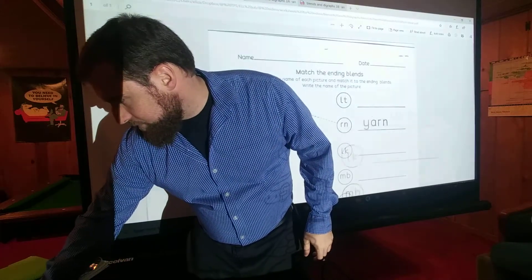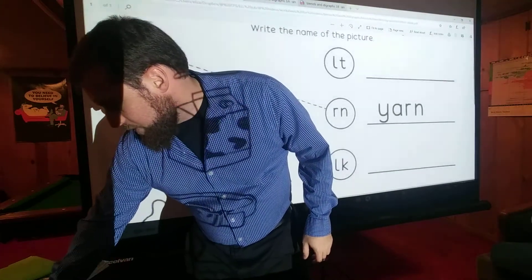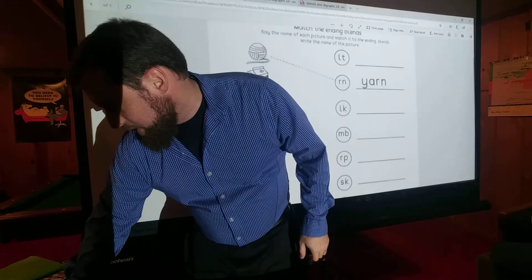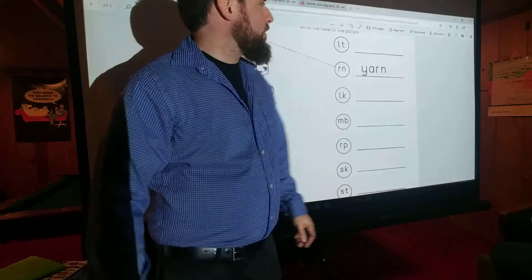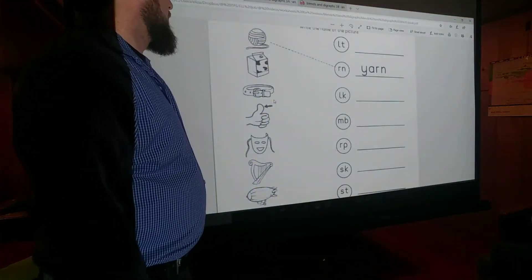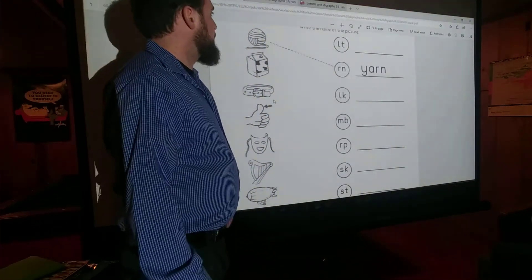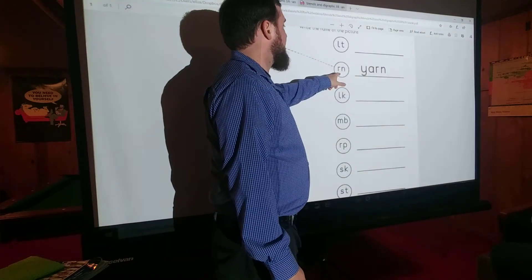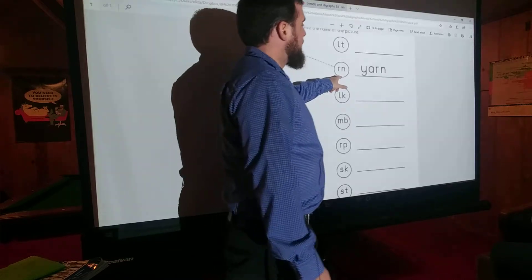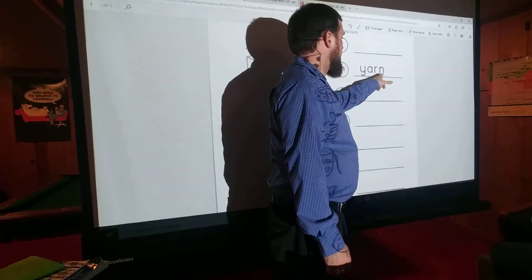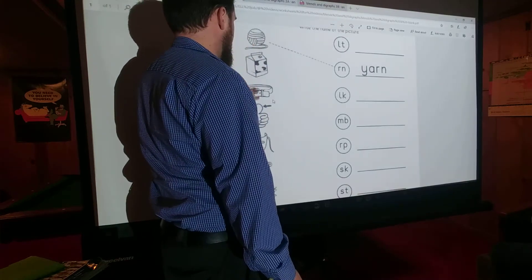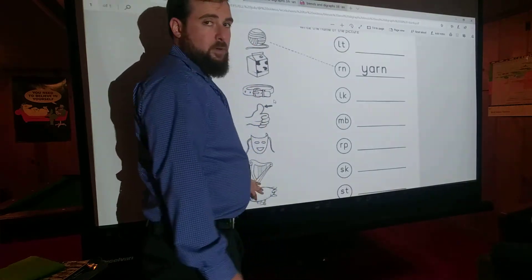So now we're going again. This one might be a little tricky because it involves some words that we may not have used before. So I'm going to go over them with you. So what you do, you draw a line from the picture to the letters at the end of the word and then you write the whole word. So this one's yarn. So to help you out, I'm going to tell you what each of these words are to make sure you know.